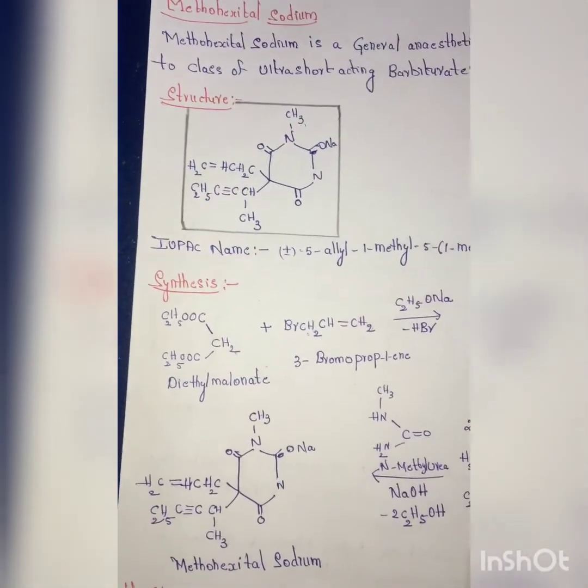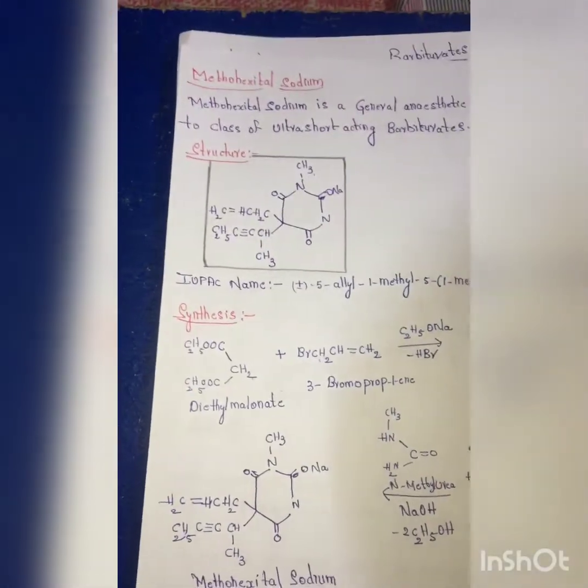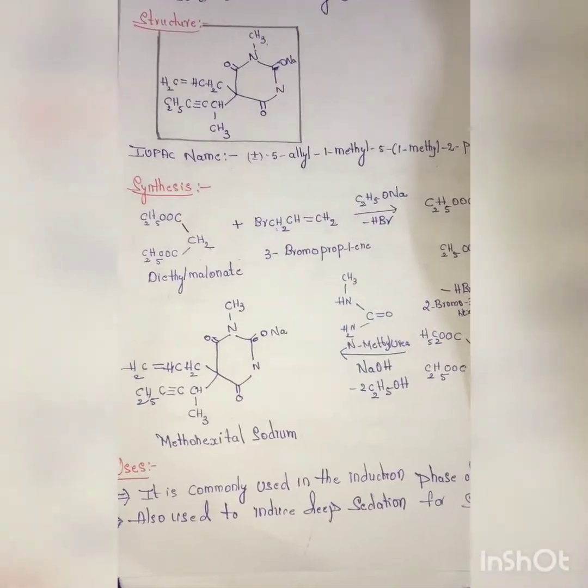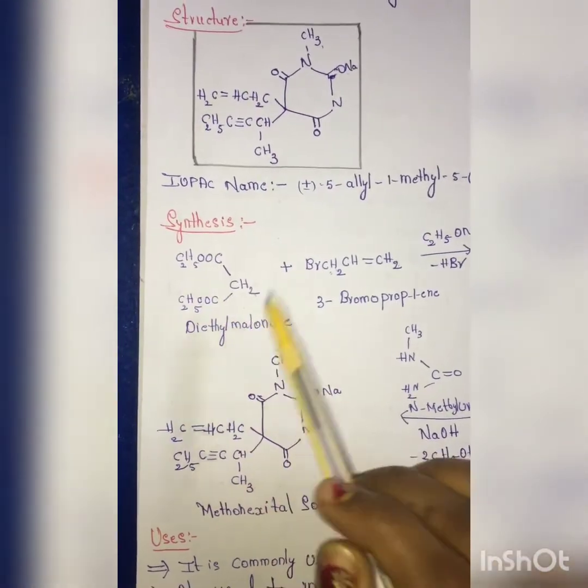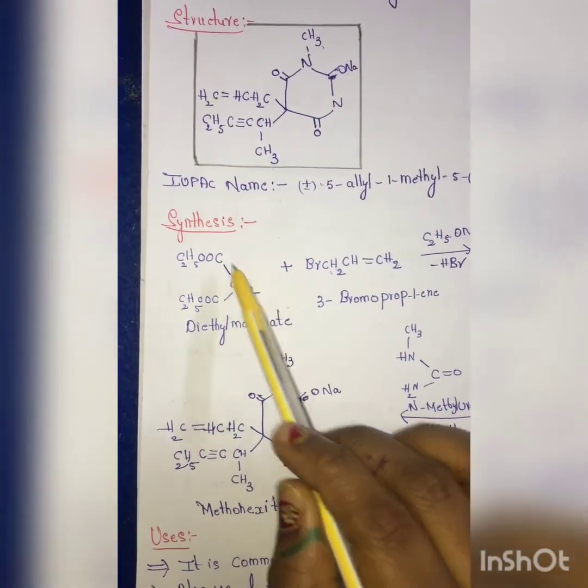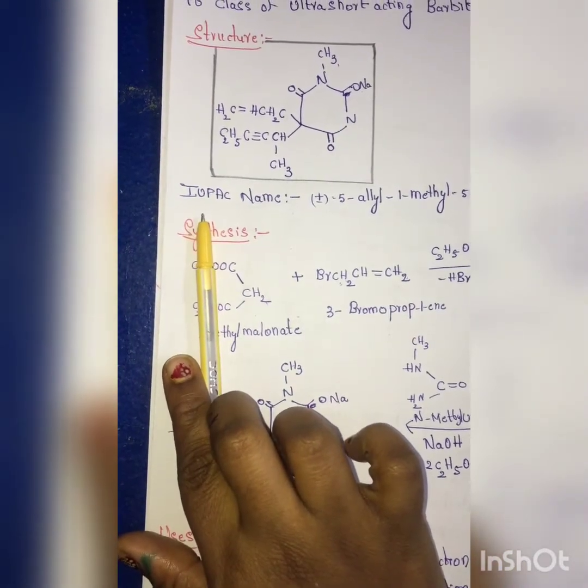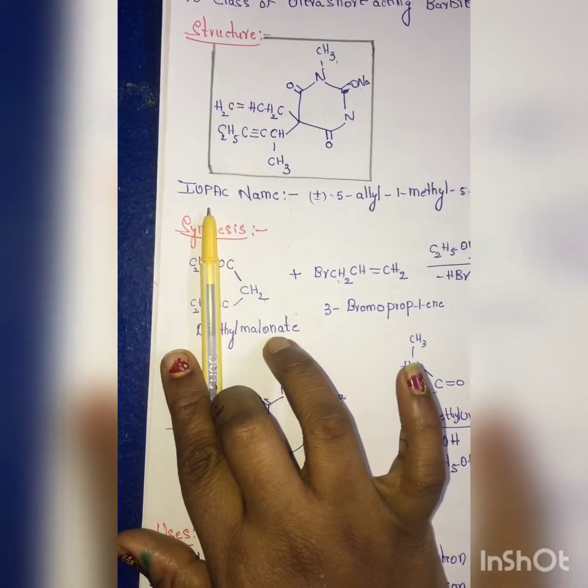Now coming to the synthesis. As I have told, barbiturates have been prepared using by the condensation of urea and diethyl malonate. First one is diethyl malonate. So diethyl malonate, what is malonic acid? CH2 COOH COOH, so that will be malonic acid.